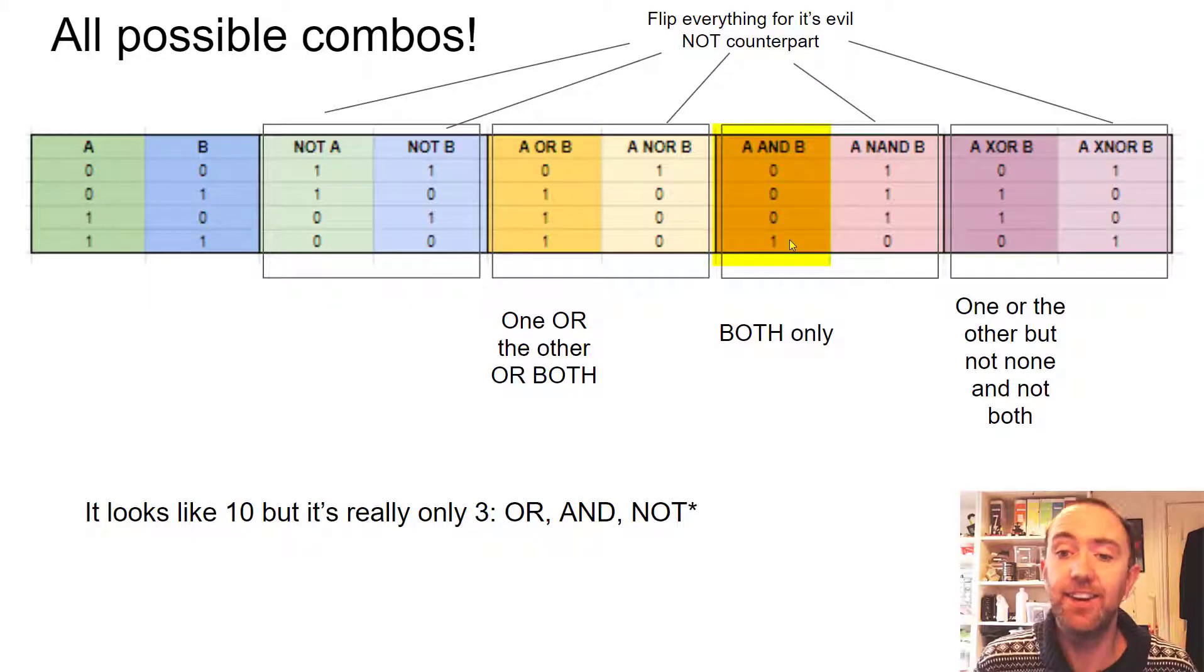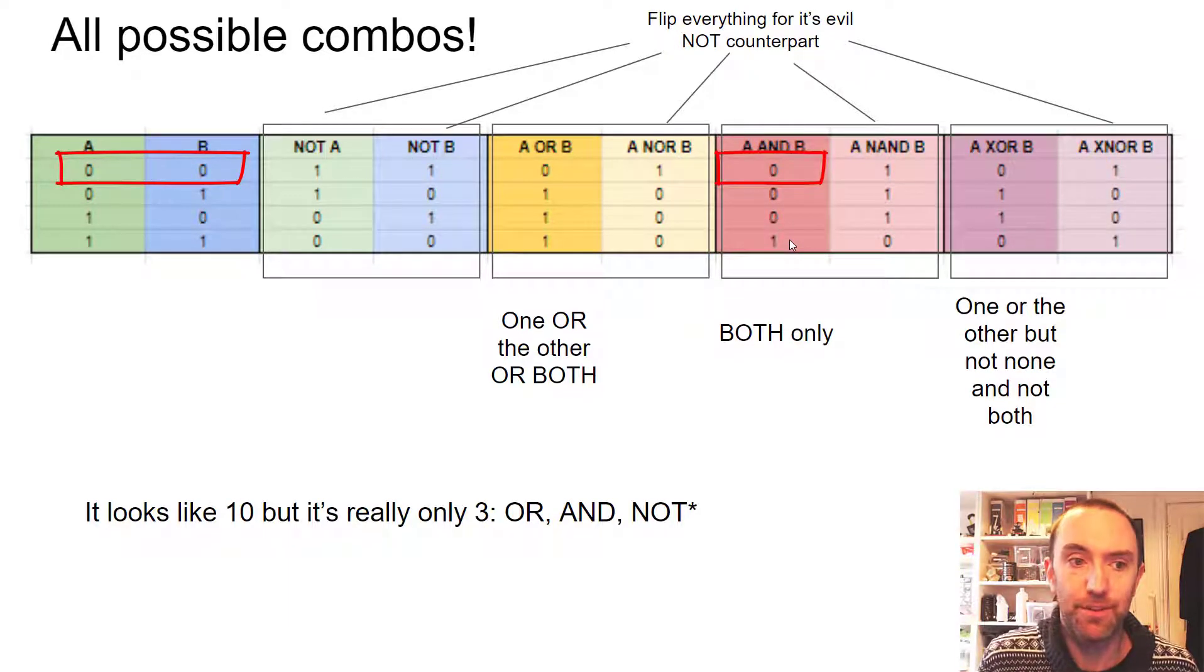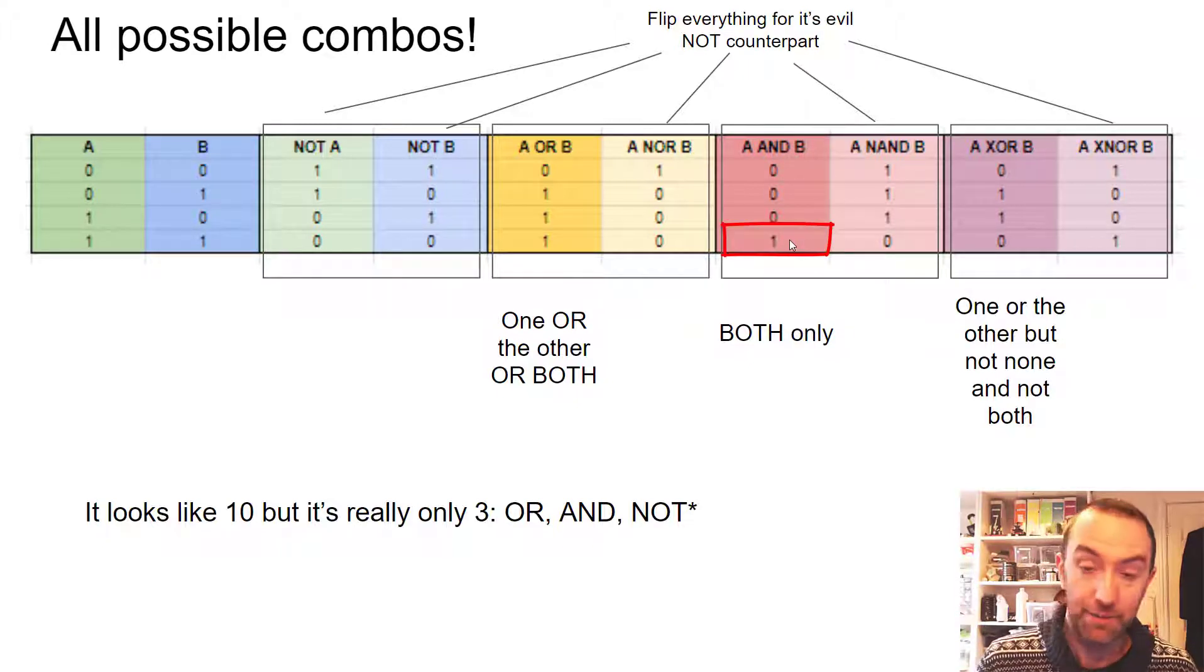So for the AND gate here, if I get zero and zero for A and B, well that's not AND. I want both of them, not none of them. And neither will zero one or one zero work because I don't want just one of them. I want both of them. And that's why the only thing that will make it through an AND gate and return a true or one is if both of them are one, one and one for A and B.